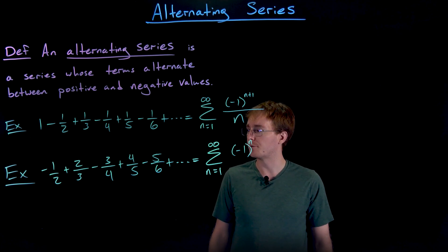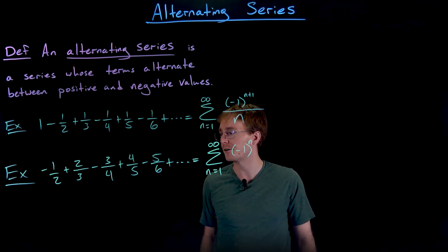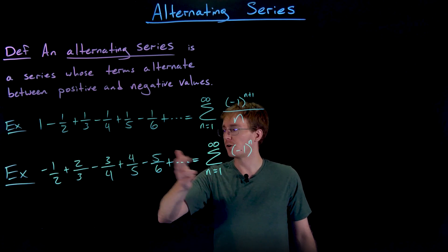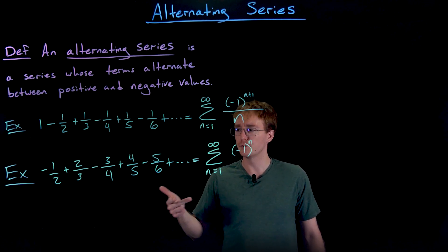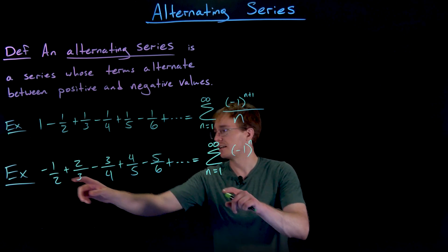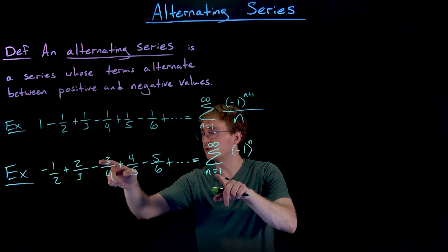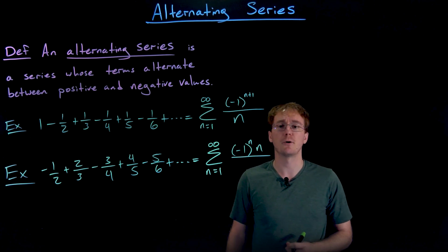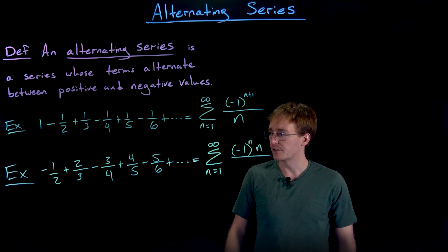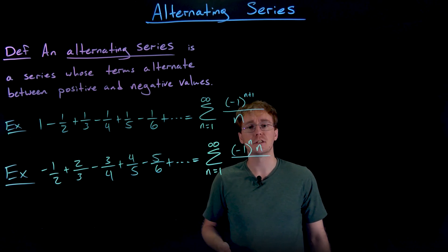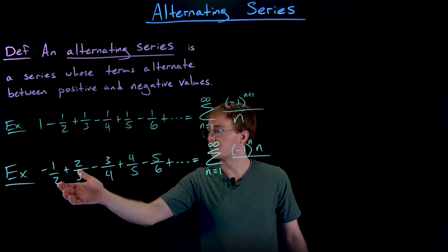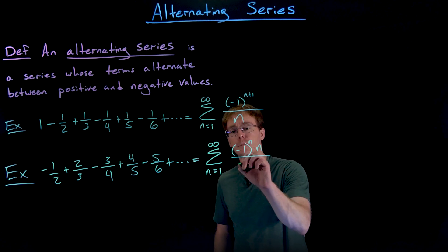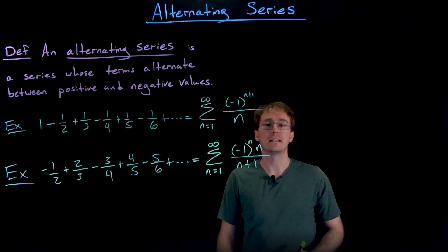Now let's describe the rest of the terms. Looking at the numerators: they go one, two, three, four, five — just increasing by one, corresponding exactly to our index n. The denominators are also increasing one at a time, but always one more than the numerator, so the denominator is n plus one. Therefore, the full sigma notation for this series is the sum from n equals one to infinity of negative one to the n times n over n plus one.